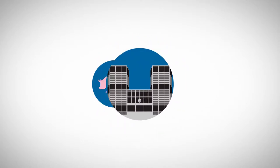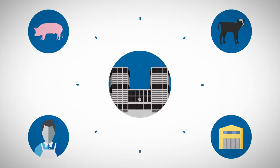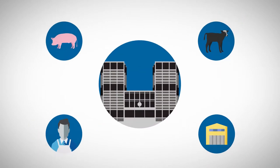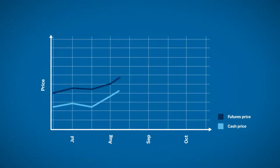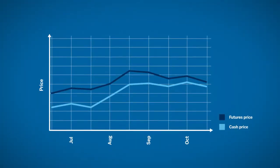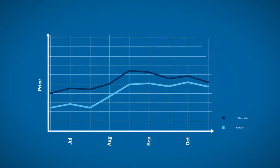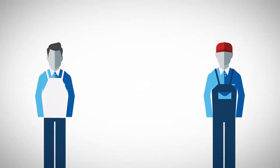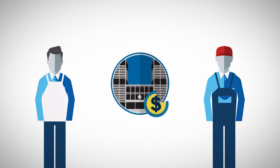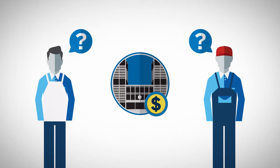The futures markets for livestock indicate the prices for cattle and hogs that are discovered through buying and selling at the exchange, representing the culmination of the forces of supply and demand. Livestock cash prices and futures prices tend to move up and down together, which is what makes the concept of effective hedging possible. But those involved in the business of buying or selling cattle and hogs are aware that the cash price in their own local area usually differs from the price quoted in the futures market.